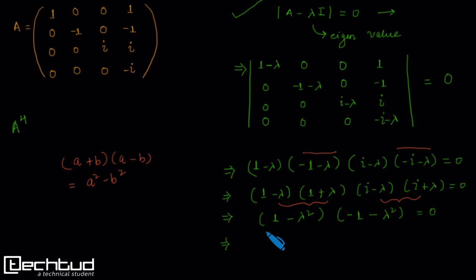Again we can see that these two terms can be reduced as 1 minus lambda square times 1 plus lambda square equals 0. These two terms can be reduced by taking minus 1 common from here and pushing it on the RHS where we divide 0 by minus 1 and the resultant will be 0. So this will in turn be 1 minus lambda to the power 4 equals 0.